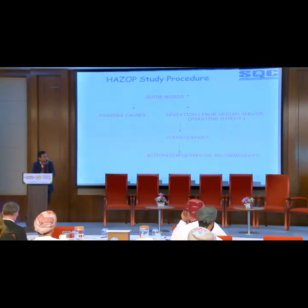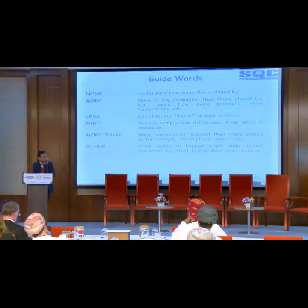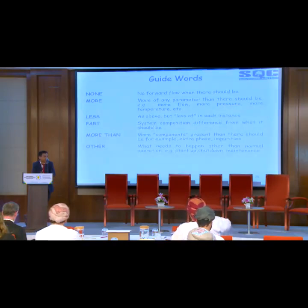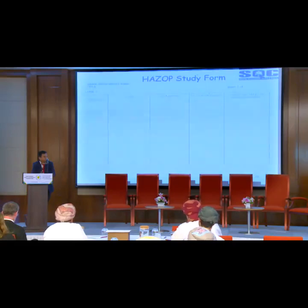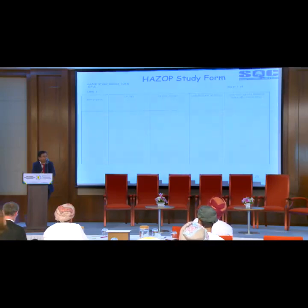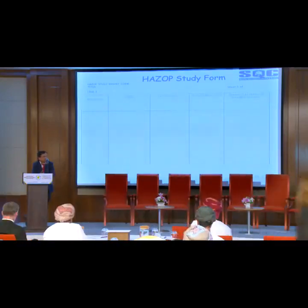The guide words are followed with the deviation, consequences, action, and possible causes. These are the basic guide words — if you go through them, you will understand. I will share this presentation so you can understand in more detail. This is the basic chart for hazard study: you have to see the deviation first, then the causes and consequences, then existing provisions, and finally the action and any recommendations you need to follow.